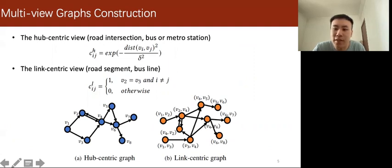To be specific, a hub is an intersection or a bus station, and in the link-centric graph, each vertex denotes a road segment or a bus line.